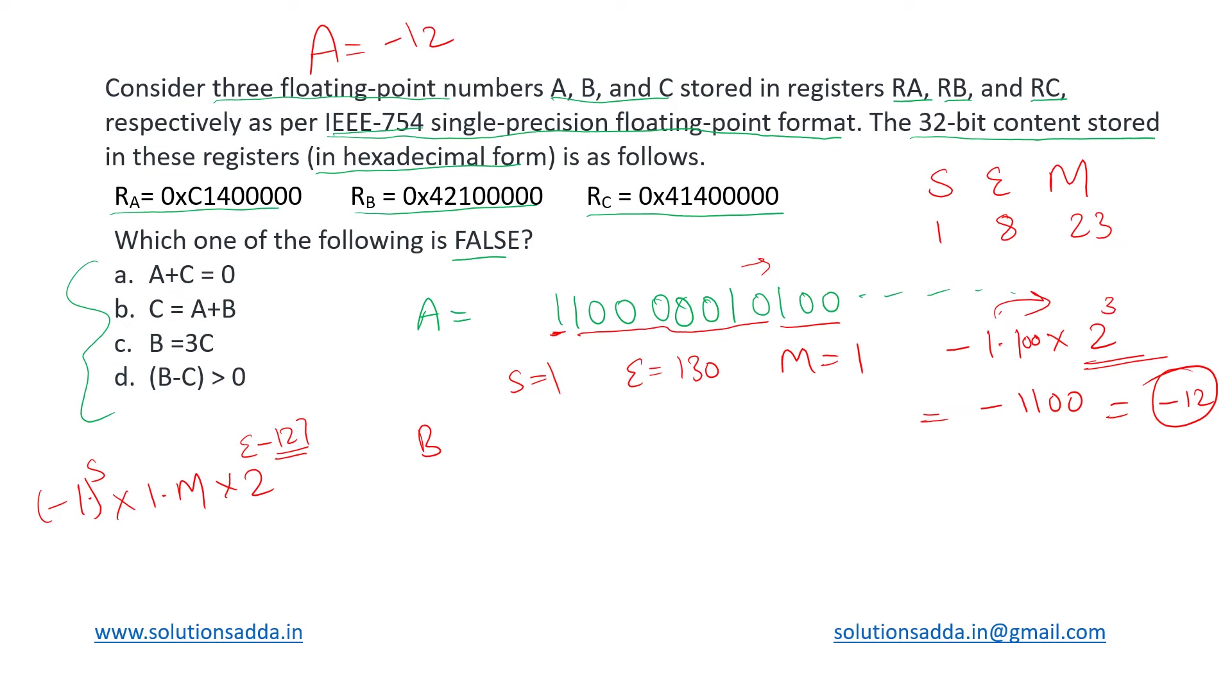Now let us evaluate B. What is B? 42100000. Let us write that in the expanded form. That will become: 4 is 0100, then 2 is 0010, then 1 is 0001, followed by all the zeros. So now here sign bit is 0.